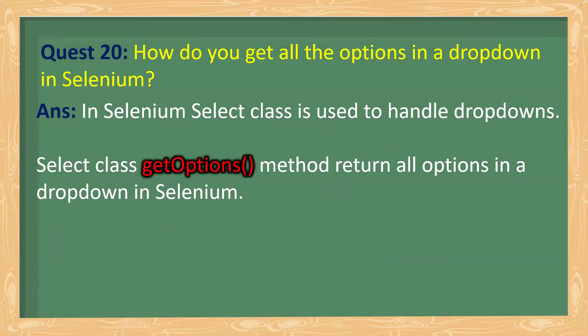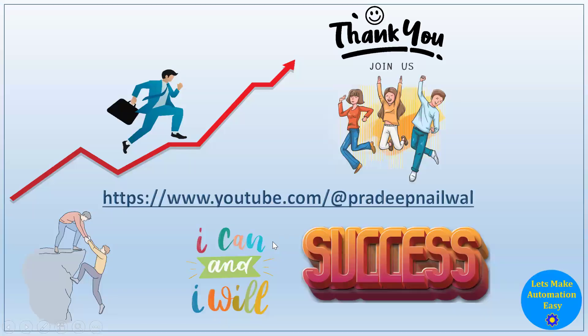How do you get all the options in a dropdown in Selenium? The Select class is used to handle dropdowns in Selenium. When you create an object of the Select class, you can call the getOptions method, which returns all the options in the dropdown as a list. You can then iterate over the options and perform whatever operations you need.